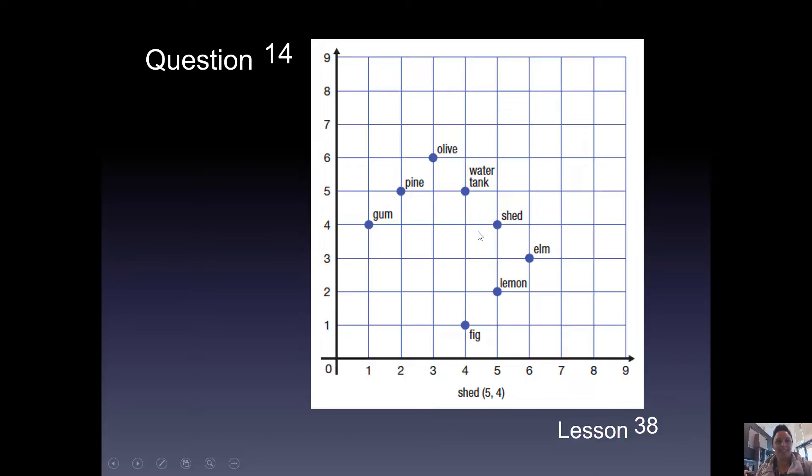Question 14. Look at the grid. To name the location, use a comma between numbers and place brackets around the pair of numbers. Name the location of the olive tree.